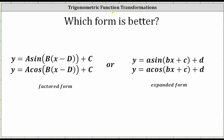When graphing trigonometric function transformations, you may come across two forms of the sine and cosine functions. On the left, we have what I'm going to call a factored form because the input into the sine or cosine function is in the form of b times the quantity x minus d. I will call the form on the right expanded form since the input of the sine or cosine function is bx plus c. One form is not better than the other, and we can always go back and forth between the two forms by either factoring or distributing. Let's do a comparison so you can make an informed decision on which form you may prefer.